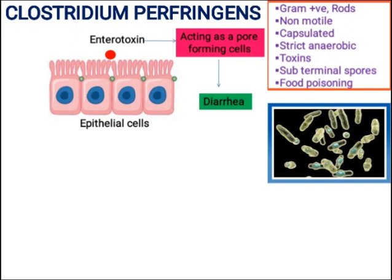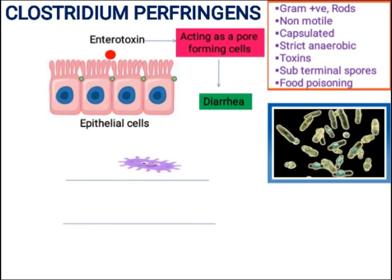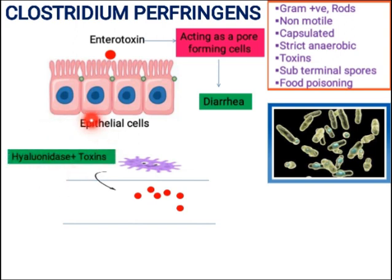In the case of Clostridium perfringens food poisoning, Clostridium perfringens invades the tissue and releases toxins such as alpha toxin. This bacteria has specific enzymes including hyaluronidase enzyme.